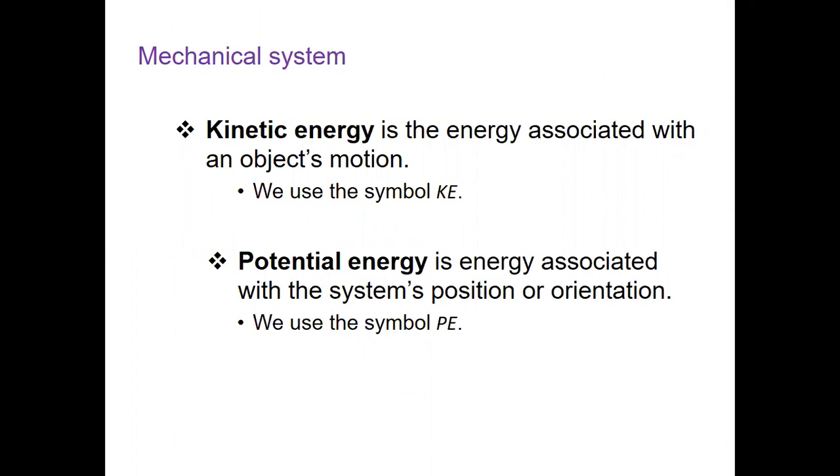Kinetic energy is the energy associated with an object's motion. Basically, the object should be in motion to have kinetic energy. In the lab manual or any textbook, at one point you might see KE to denote kinetic energy. Potential energy is the energy associated with the system's position with reference to the zero potential level. The symbol we use to represent potential energy is PE. What's the unit to measure kinetic energy and potential energy? Those are energies. It doesn't matter what type of energy it is. Energy is measured in joules.